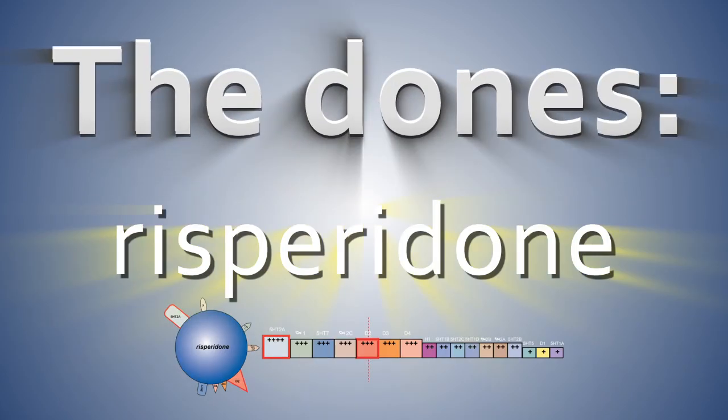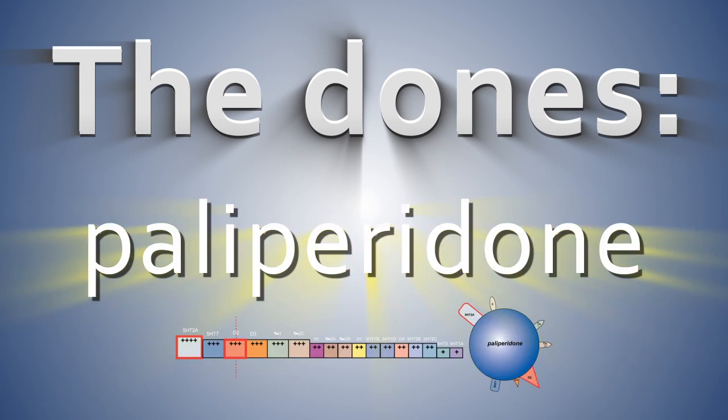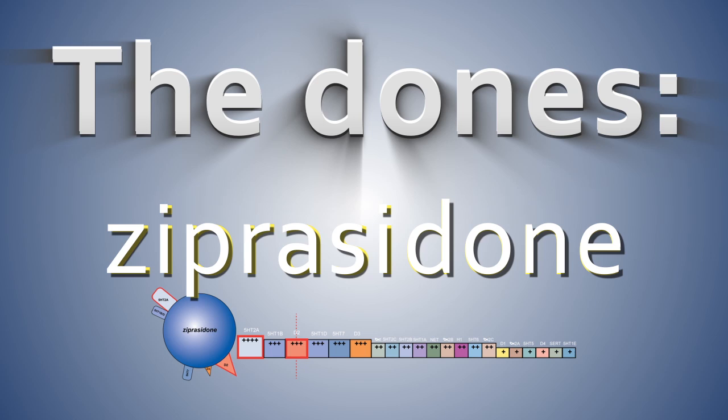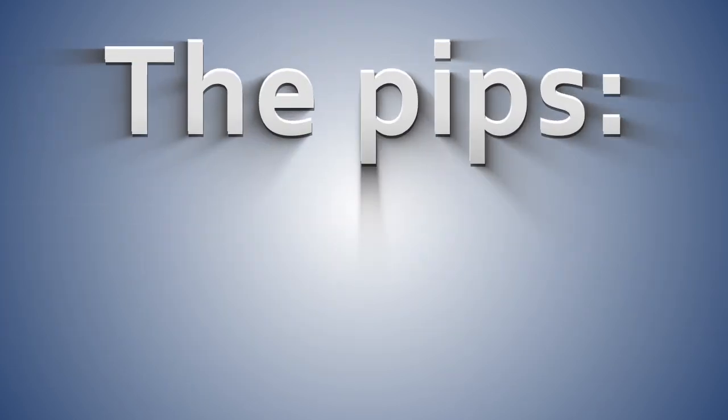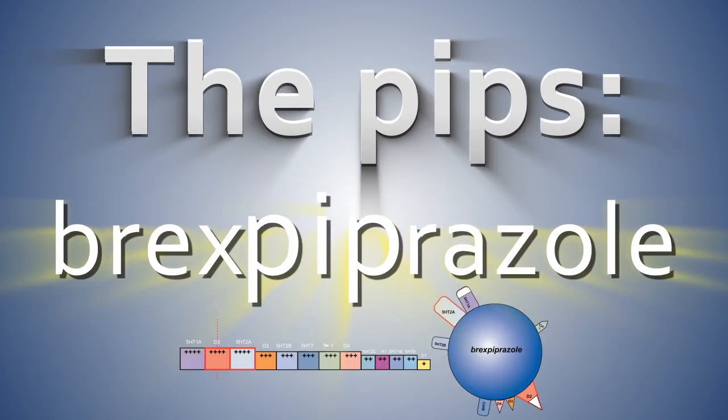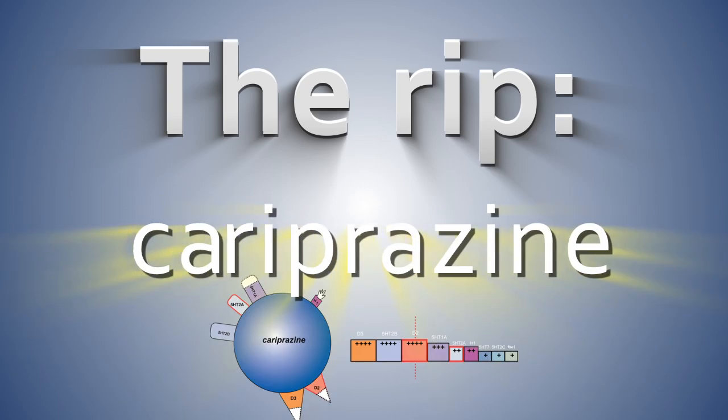The dones: risperidone, paliperidone, iloperidone, lurasidone, trazodone. The pips: aripiprazole, brexpiprazole. And the rip: cariprazine.